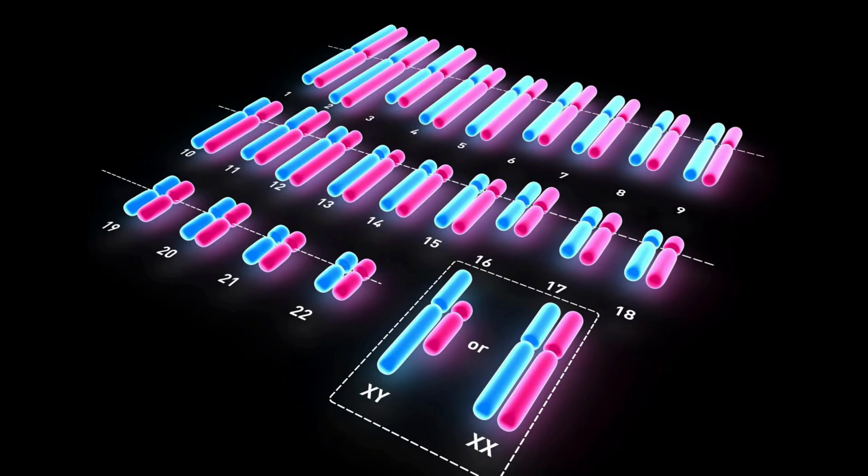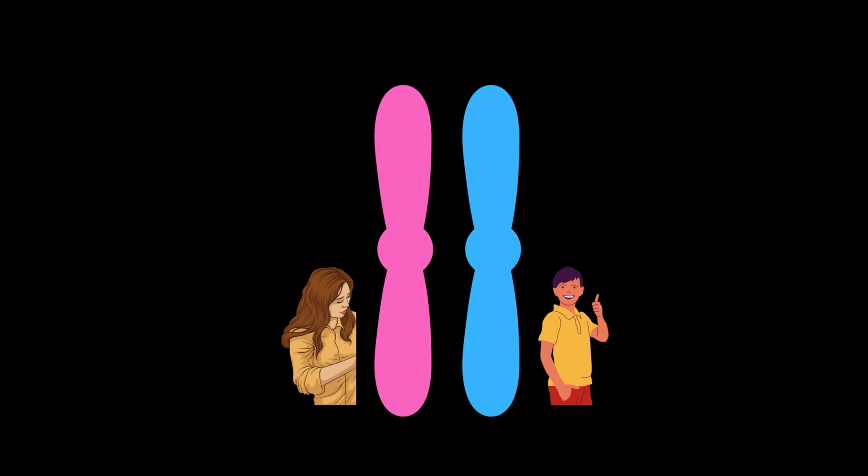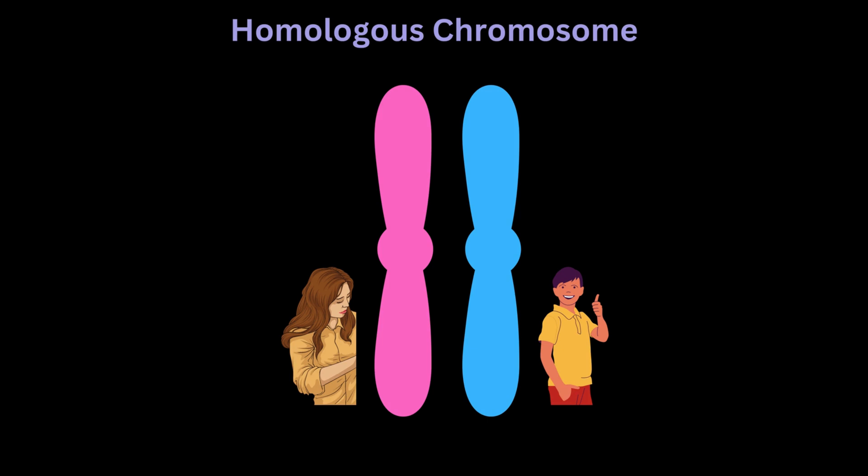We often number the chromosomes as 1 to 22, and this numbering is based on the size of the chromosome. Every individual will have two chromosome 1s in their nucleus — one chromosome 1 from the mother and one chromosome 1 from the father. These two chromosome 1s inherited from the mother and the father are called homologous chromosomes.